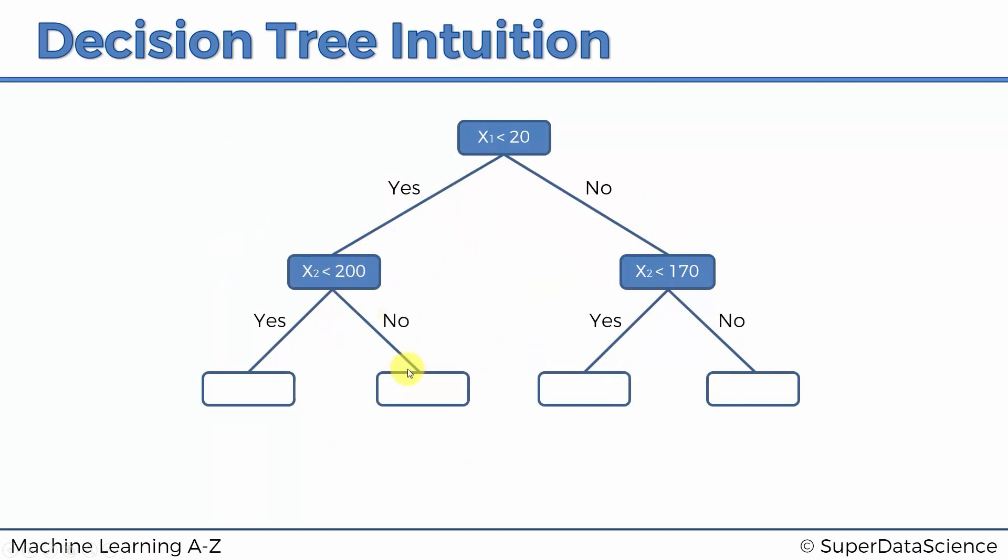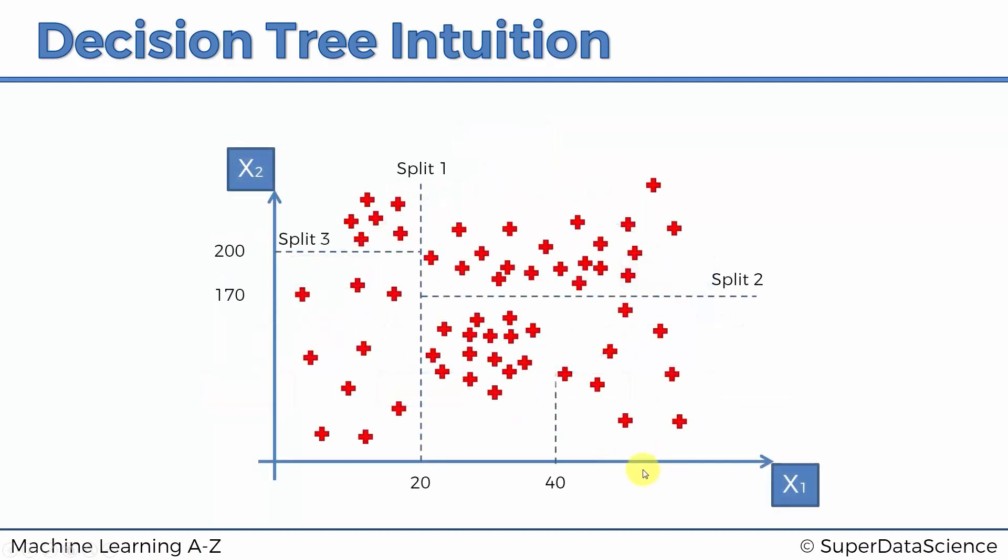Then split three happens on the other side and it checks if x2 is less than 200. Let's add that here: x2 is less than 200. And then split four happens at 40, and it checks if x1 is greater or less than 40.